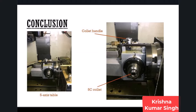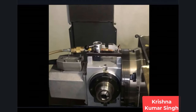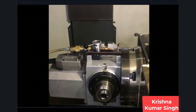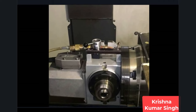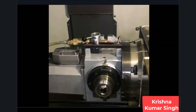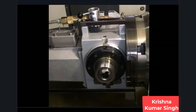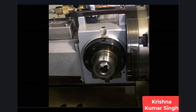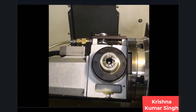This 5-axis table uses a 5C collet which can open and close to hold the part. You can also program angular movements on this 5-axis table. I will move the B-axis and then the A-axis. We will fix the part from the portion we machined on the lathe and place it in the 5-axis table to machine the back side.